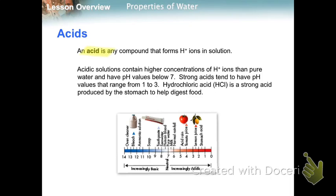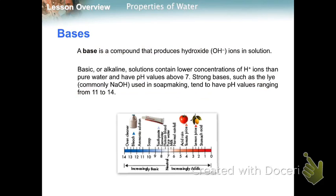An acid is any compound that forms hydrogen ions in solution. Hydrochloric acid is an example — a strong acid produced by the stomach to help digest food. Bases produce hydroxide (OH) ions in solution. Lye, also called sodium hydroxide (NaOH), which is used in soap making, is a strong base with a pH above 7.